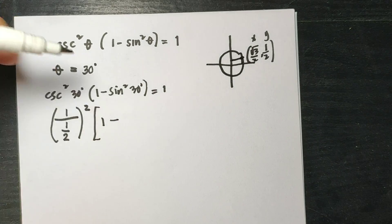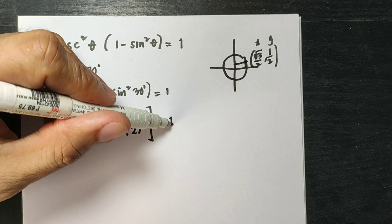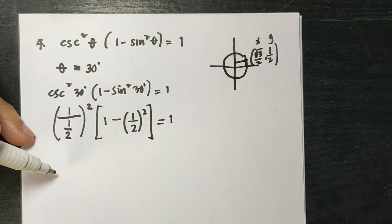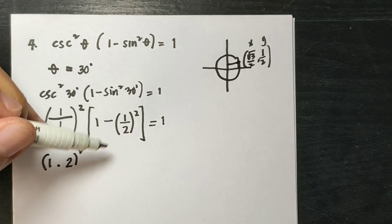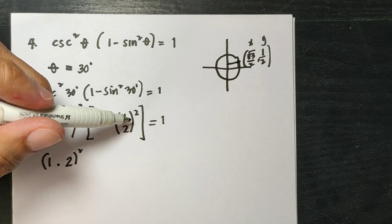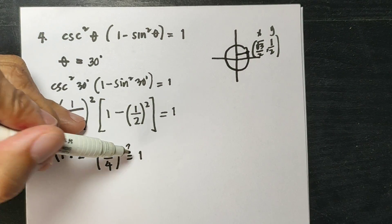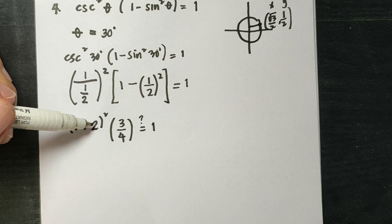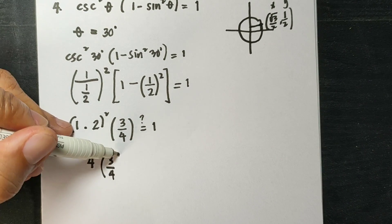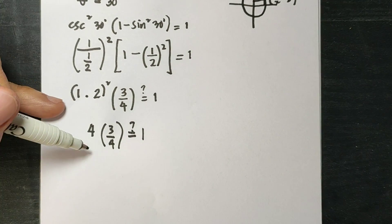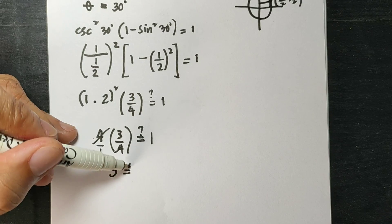Multiply by 1 minus sine squared 30, where sine 30 is 1 half, so 1 half squared is 1 fourth, and 1 minus 1 fourth is 3 fourths. Equals 1. Now simplifying: 1 over 1 half is 2, and 2 squared is 4. So we have 4 times 3 fourths, which is 12 over 4, that is 3. And 3 is not equal to 1.